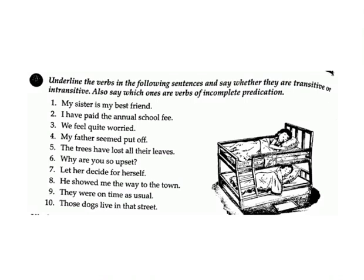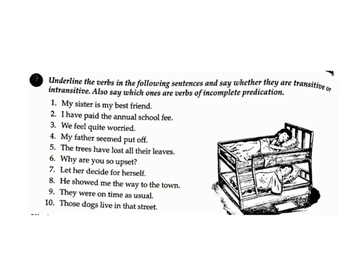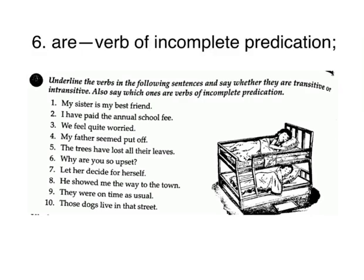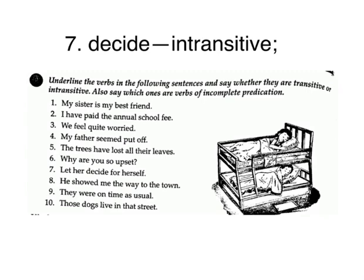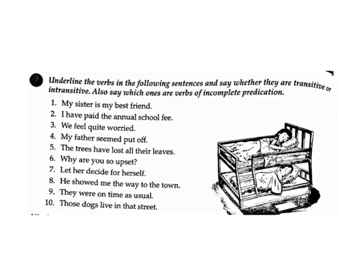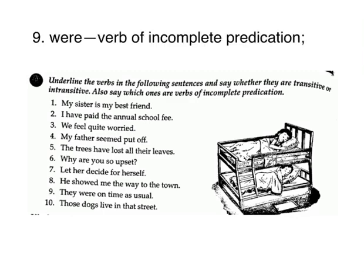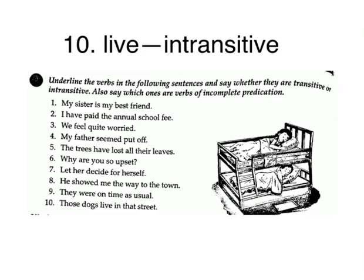5. The trees have lost all their leaves. Answer: have lost — transitive. 6. Why are you so upset? Answer: verb of incomplete predication. 7. Let her decide for herself. Answer: decide — intransitive. 8. He showed me the way to the town. Answer: showed — transitive. 9. They were on time as usual. Answer: were — verb of incomplete predication. 10. Those dogs live in that street. Answer: live — intransitive.